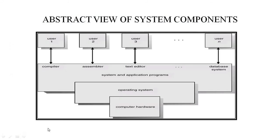This is the abstract view of a system component. The structure of operating system consists of four layers: hardware, software, operating system, and system and application programs. The hardware part consists of CPU, main memory, input-output devices, secondary storage, etc.